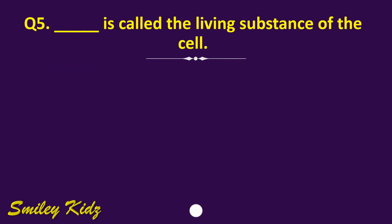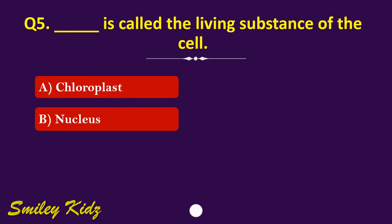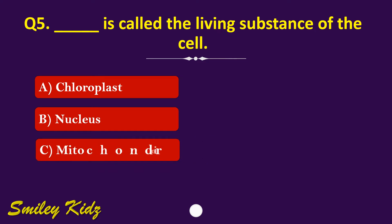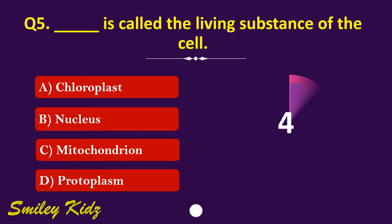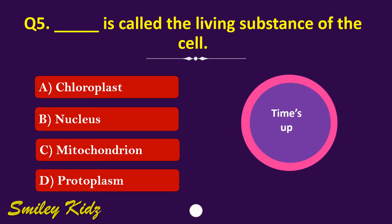Question number 5. Dash is called the living substance of the cell. The options are: A. Chloroplast, B. Nucleus, C. Mitochondria, or D. Protoplasm. Your time starts now. Your time is up and the right answer is option D. Protoplasm. Protoplasm is called the living substance of the cell.